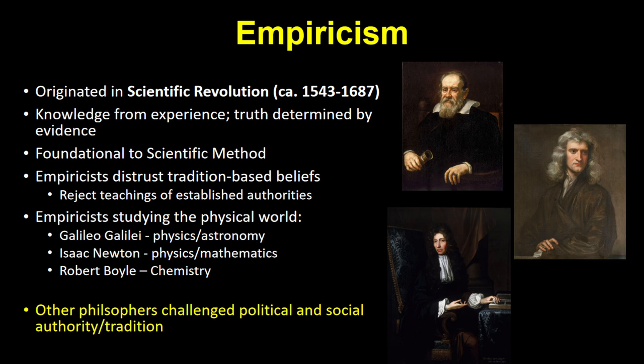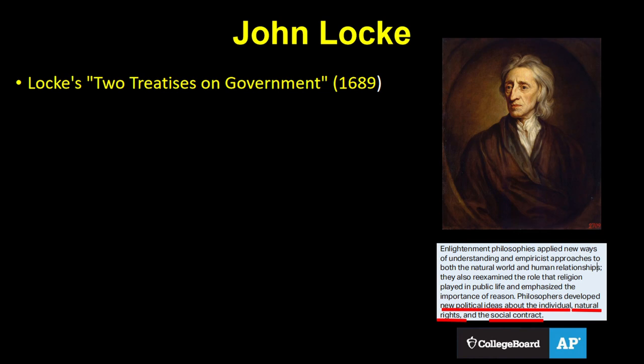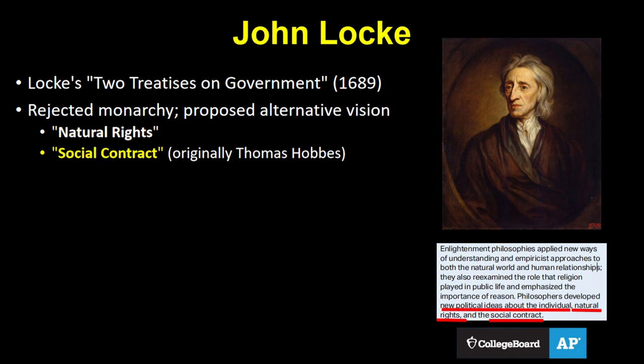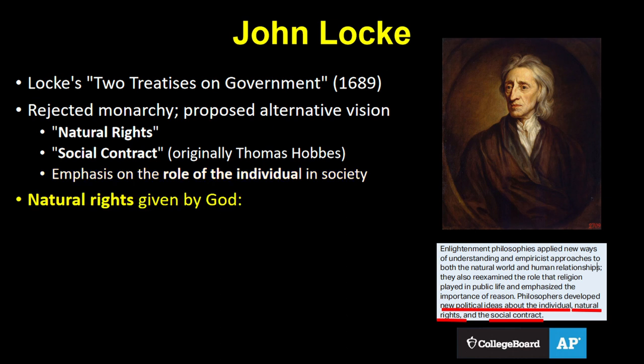The most important one to know is John Locke. In his work Two Treatises on Government, Locke rejected absolutism and presented an alternative political vision, which included two concepts required in the CED: natural rights and the social contract. Both are based on the important role of the individual in society. Locke believed all individuals have natural rights — given by God and fundamental to being human — which are life, liberty, and property.